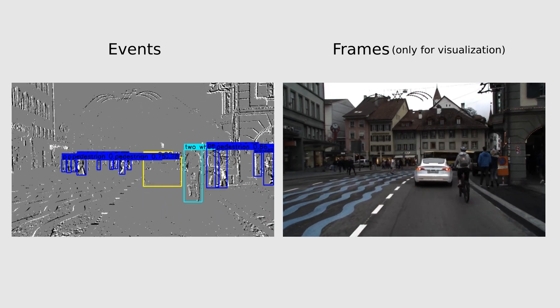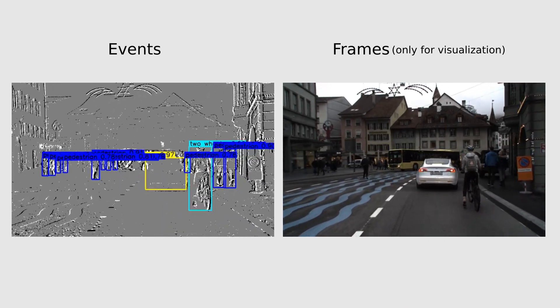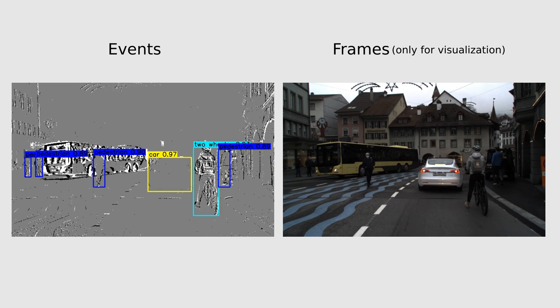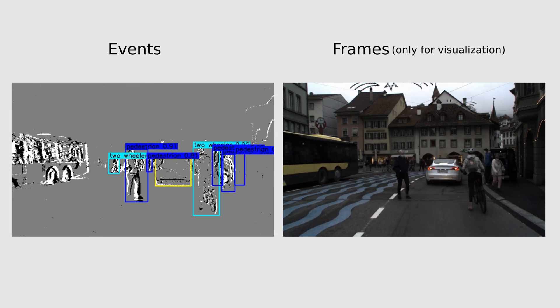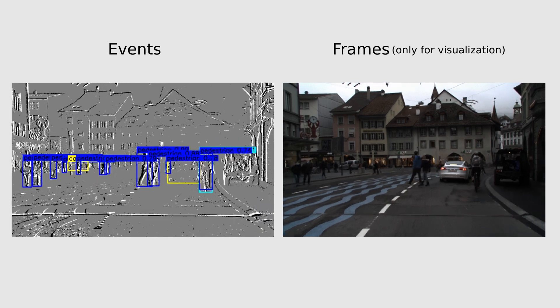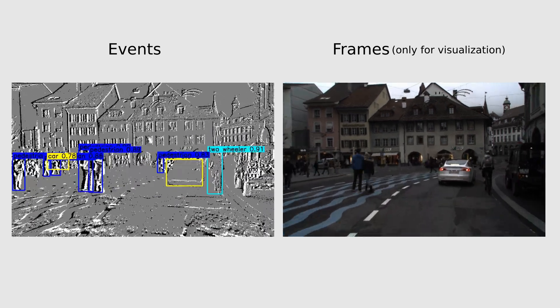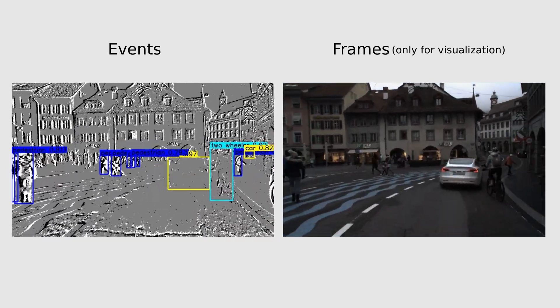This video illustrates our model's performance, originally trained on the 1MPX dataset from Paris, now predicting on the DSEC dataset, captured in Switzerland with a different camera. It effectively showcases our model's versatility and generalization across varying datasets and camera types.